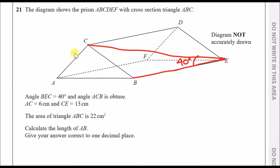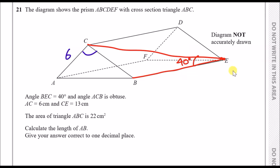Obtuse means the angle is larger than 90 degrees, so angle ACB, from A to C to B, is greater than 90 degrees. For the next bit, it tells us that AC is 6 and CE is 13. So let's update the prism: from A to C we put 6, and from C to E, which is the diagonal length, it's 13.